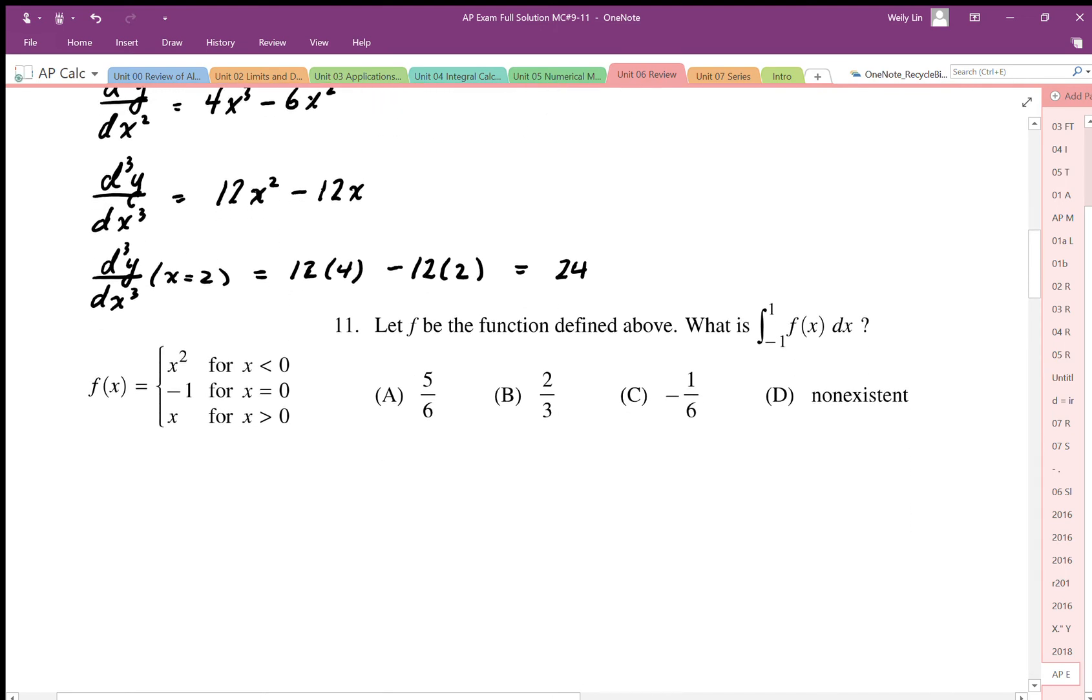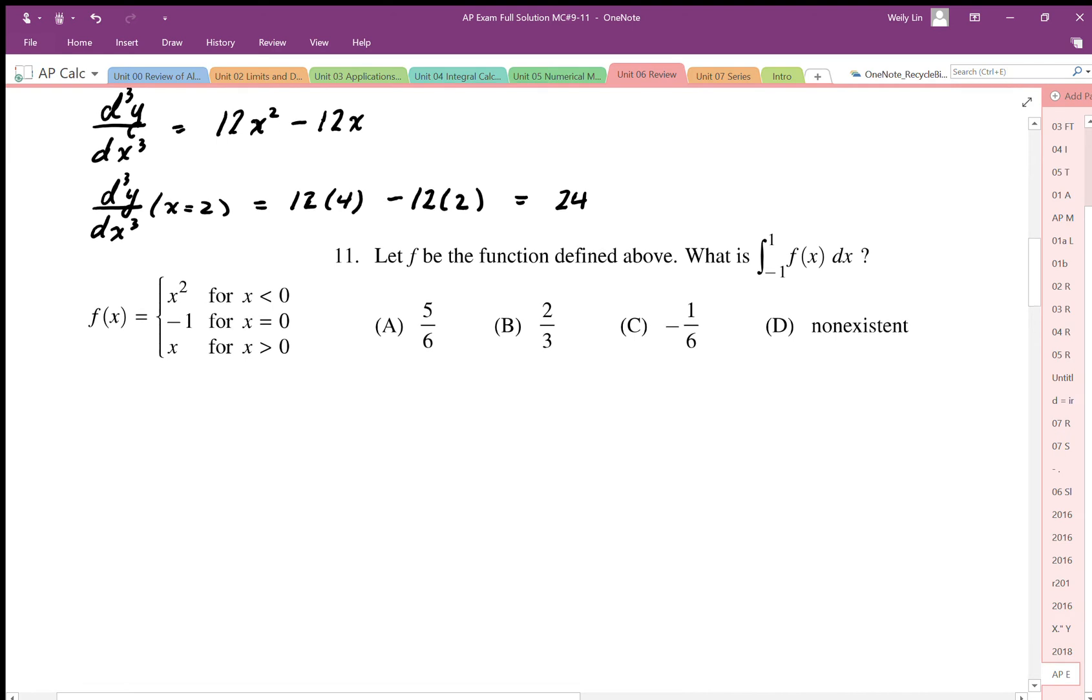For number 11, this is a piecewise function. So it's not a bad idea to just figure out what does this piecewise function look like. It's a parabola all the way to 0. If we hit 0, x is equal to negative 1. So we have some point down here. And for greater than 0, it's just a linear function that looks like that.